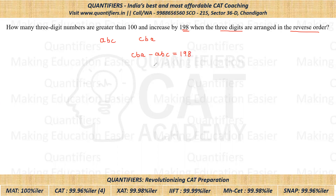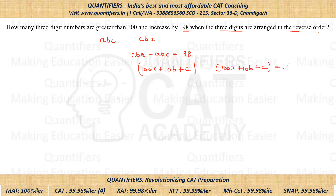I hope all of you know how we represent a three-digit number. The number CBA can be written as 100C + 10B + A, minus ABC which is 100A + 10B + C. This difference equals 198. If we simplify it, we get 99C minus 99A, which we can write as 99(C − A) = 198.